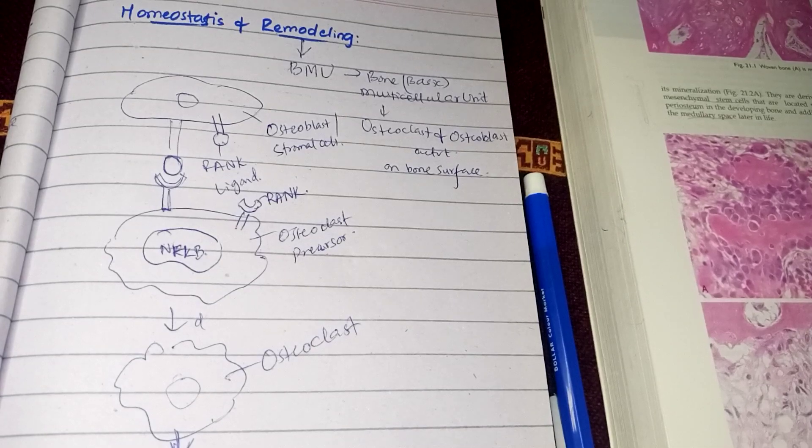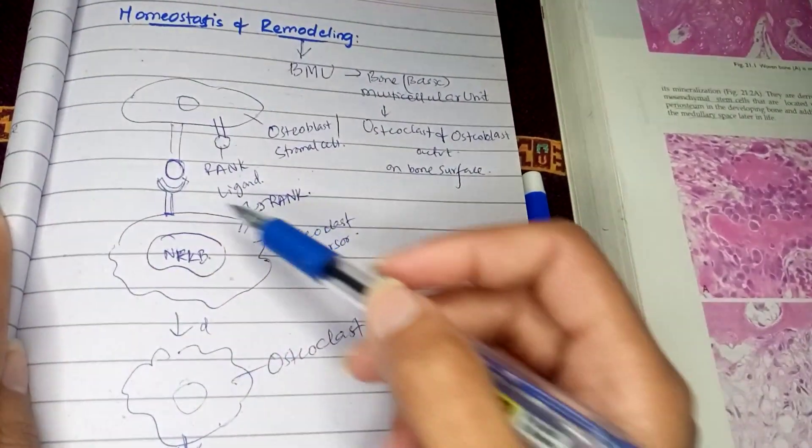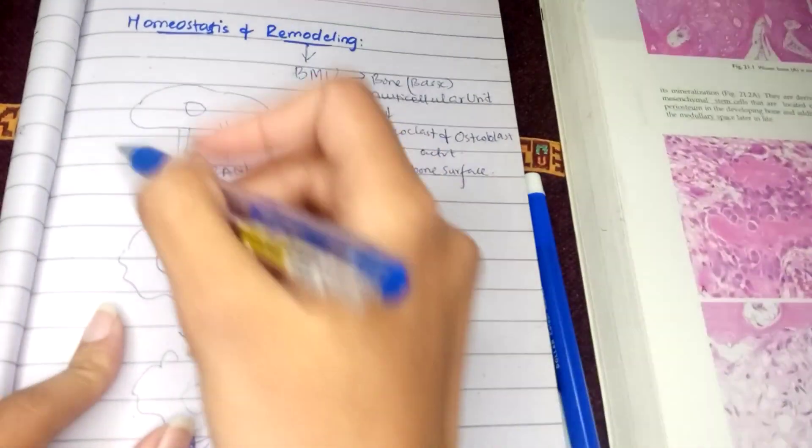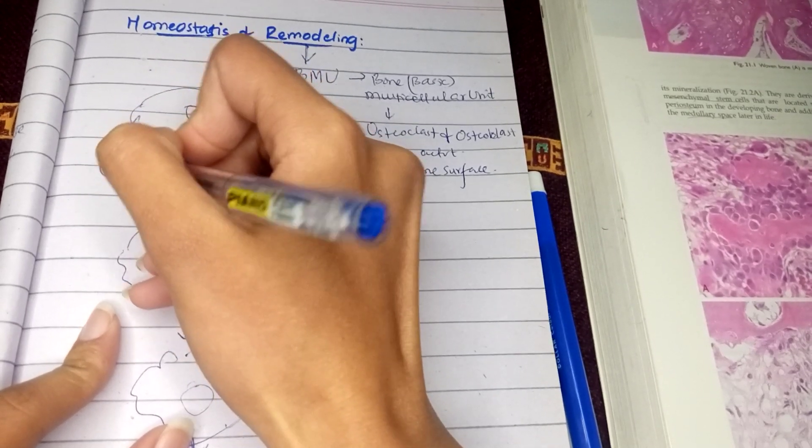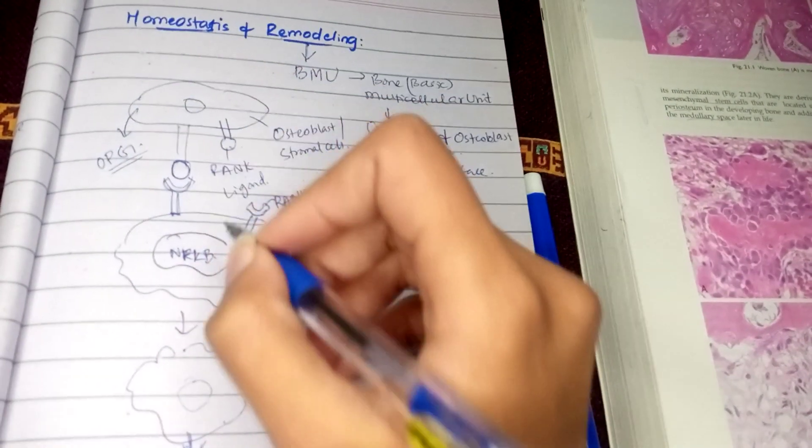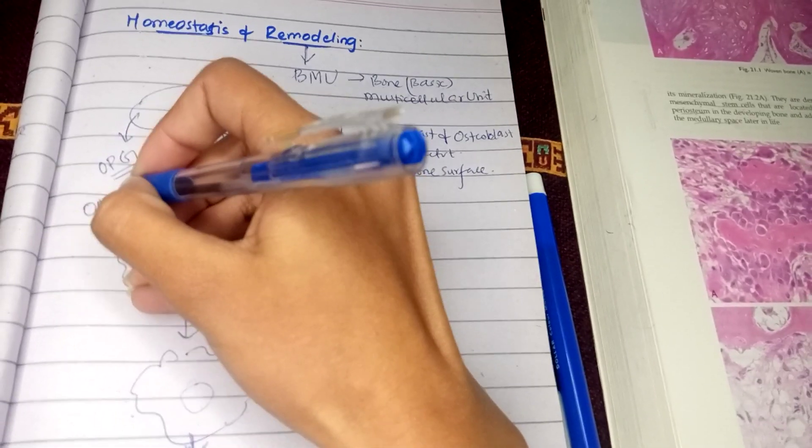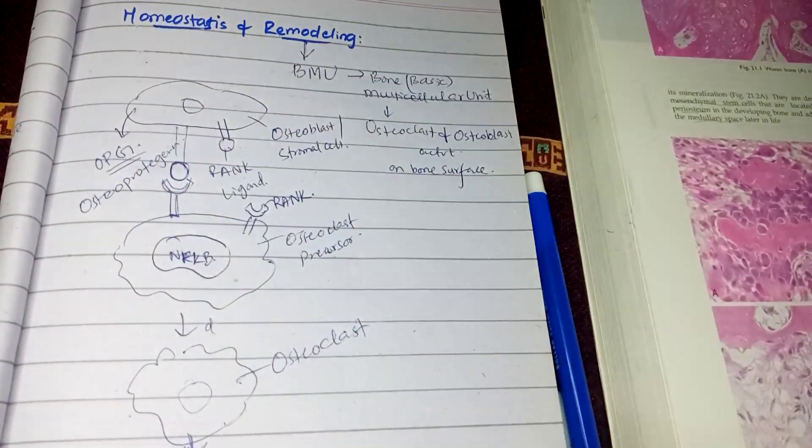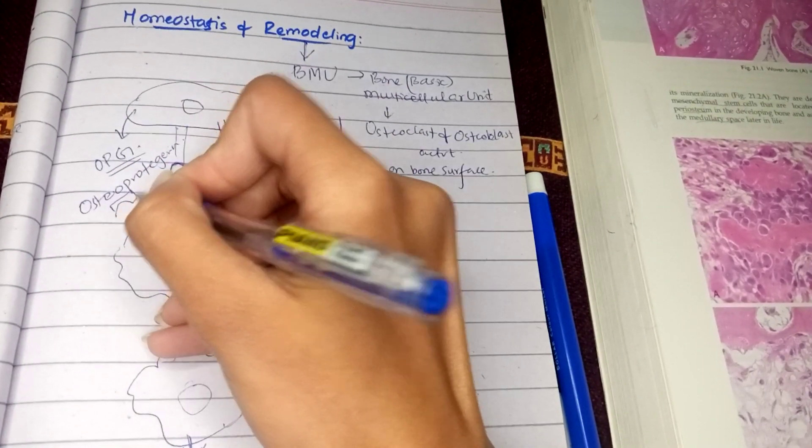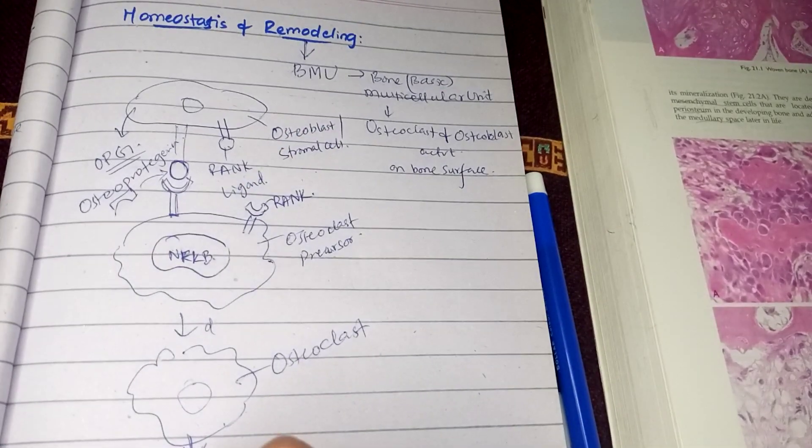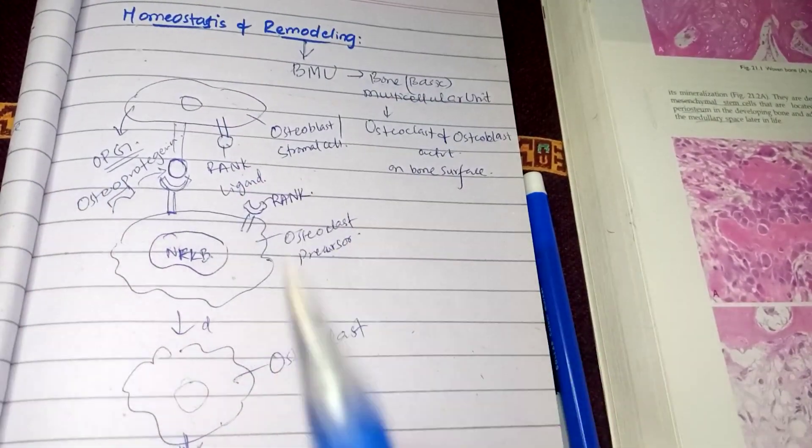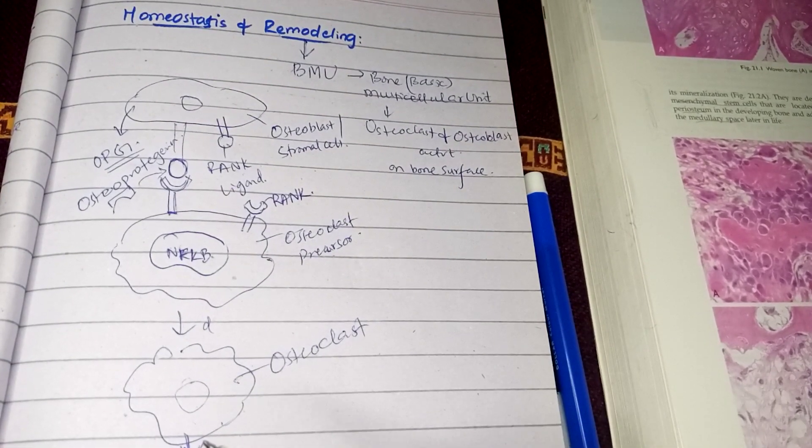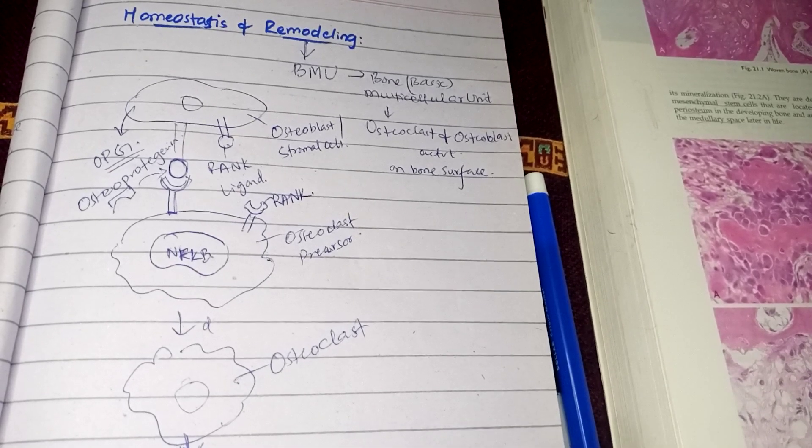What other factors regulate bone resorption or formation? We have OPG, referred to as osteoprotegerin. This interferes with this attachment, preventing the rank ligand from binding with the rank receptors. In this way, there would be no differentiation, no bone resorption, favoring bone formation.